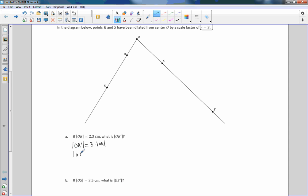So the length of OR prime equals 3 times, now I say this to my students all the time, write the formula, substitute in the givens, simplify and solve. So I'm substituting them. So I'm going to replace OR with 2.3 centimeters. So then I'm going to say OR prime equals 3 times 2.3, which is 6.9 centimeters.